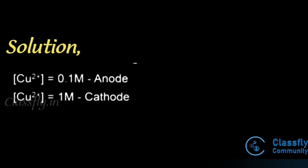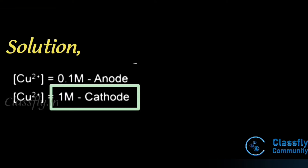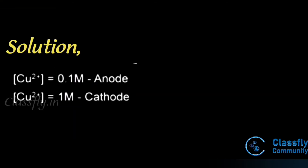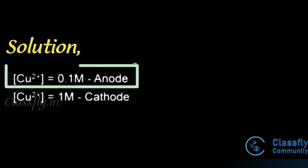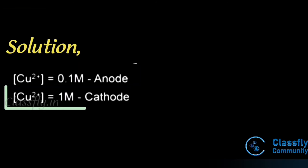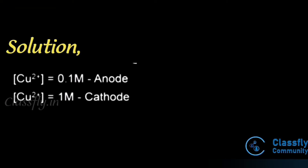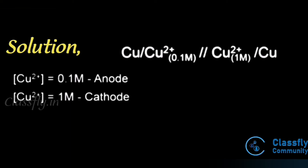Higher concentration acts as cathode and lower concentration acts as anode. So [Cu²⁺] = 0.1 M acts as anode and [Cu²⁺] = 1 M acts as cathode. The cell representation is: Cu | Cu²⁺ (0.1 M) ║ Cu²⁺ (1 M) | Cu, with the left side as anode and right side as cathode.